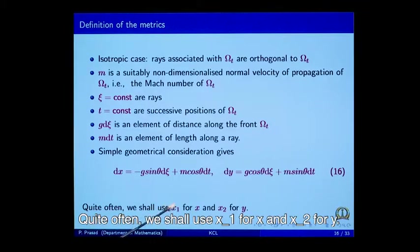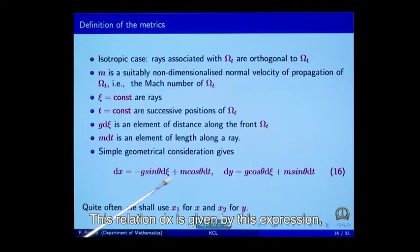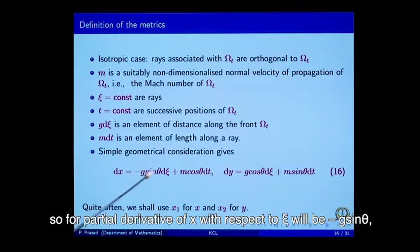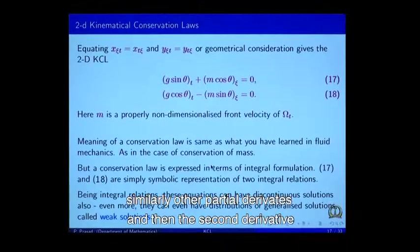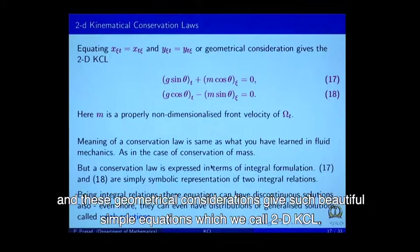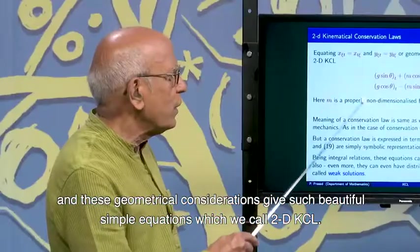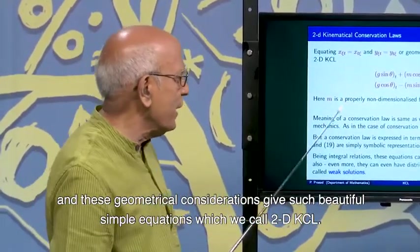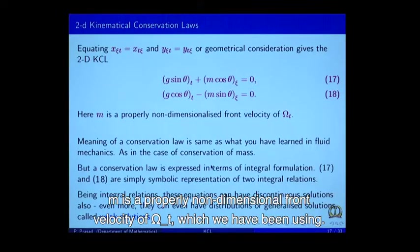We shall use x_1 for x and x_2 for y. Since dx is given by this expression, the partial derivative of x with respect to xi is minus g sin theta. Similarly for other partial derivatives. Equating the second derivatives x_{xi t} and x_{t xi} for a smooth curve, these geometrical considerations give us simple and beautiful equations which we call the 2D KCL. Here m is the properly non-dimensional front velocity of omega t.